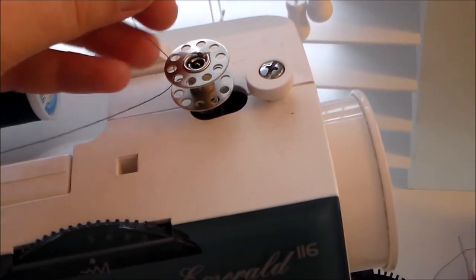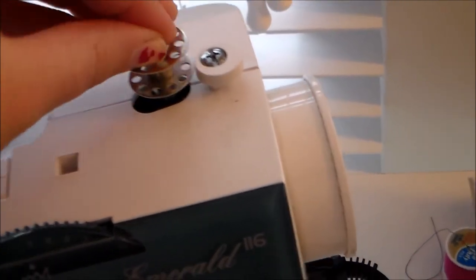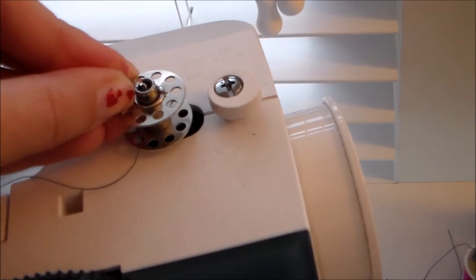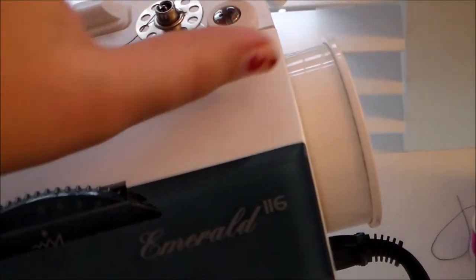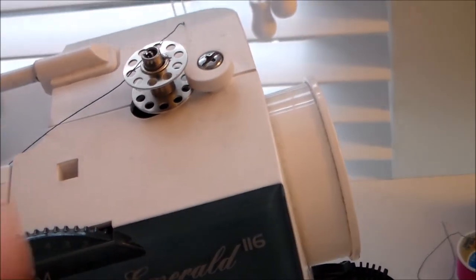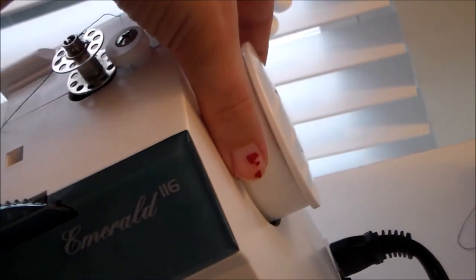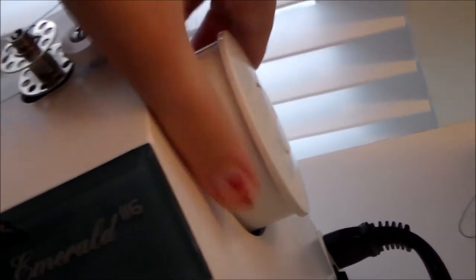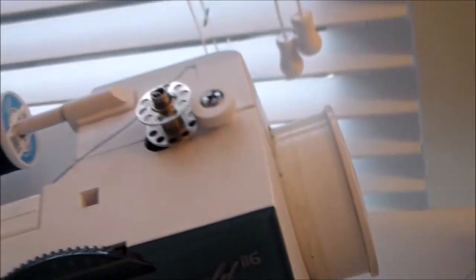Grab the end and bring it down a little bit more, then we're going to bring it over and this is going to act as a little guideline. And for this machine to activate the bobbin you're going to pull this section outward until it pops.